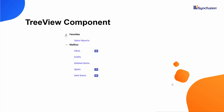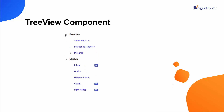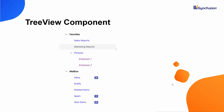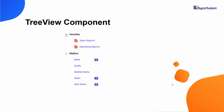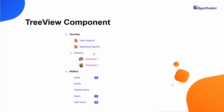Looking at this example, you can see the TreeView component nodes are customized based on their levels. Here, icons and images were added to the tree nodes, and the expand and collapse icons were also customized.